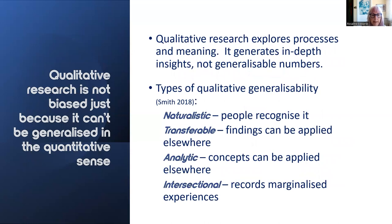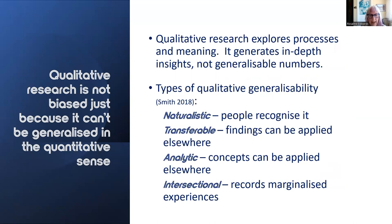Moving on to the second key message. Qualitative research isn't biased just because it can't be generalised in the quantitative sense. Qualitative research explores processes and meanings. It generates generalisable, in-depth insights, not facts and figures that are generalisable. It's a misunderstanding to claim that qualitative research lacks generalisability. Statistical types of generalisability that inform quantitative research aren't applicable to judge qualitative research. Generalisations can be made from qualitative research, but not in the same way as quantitative results.